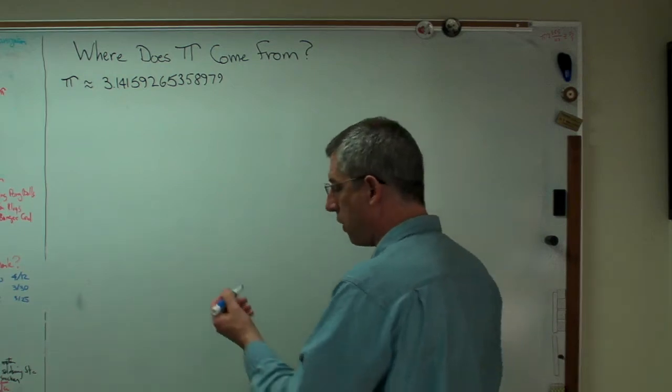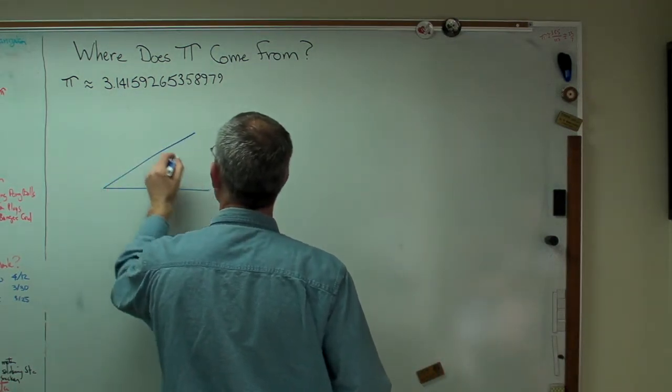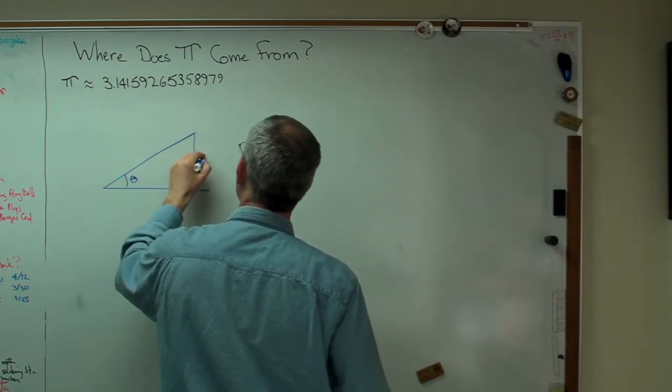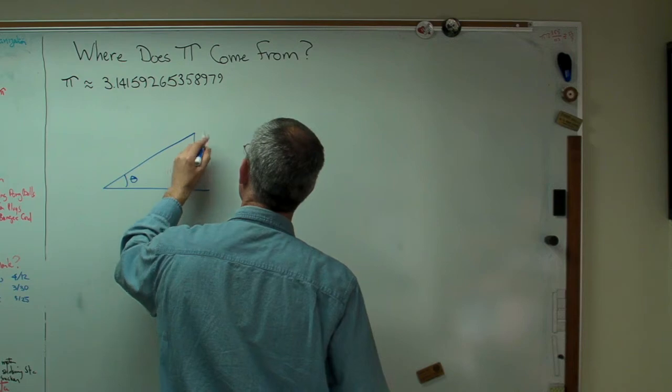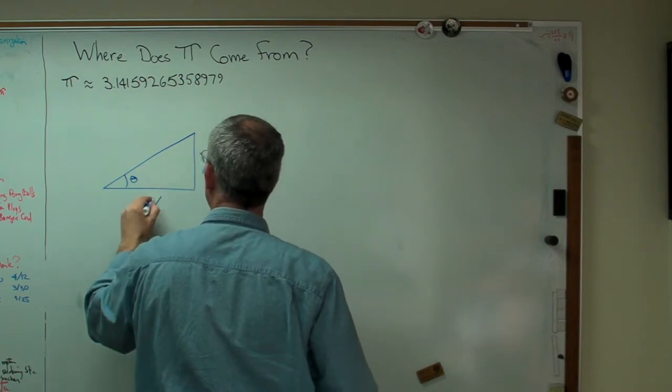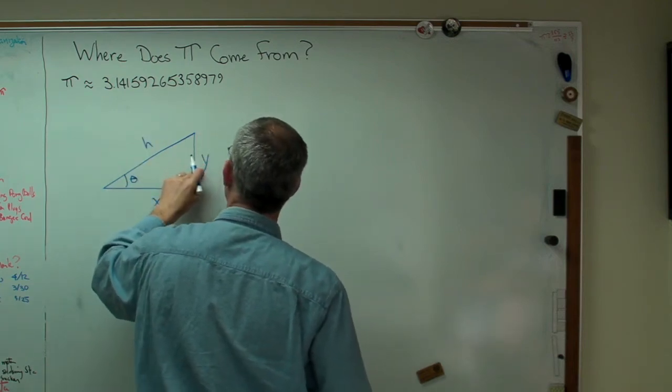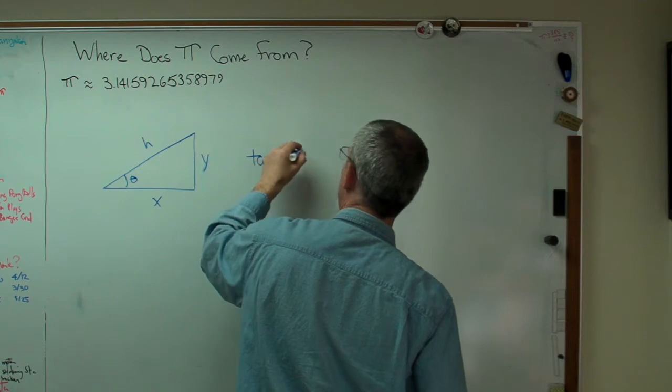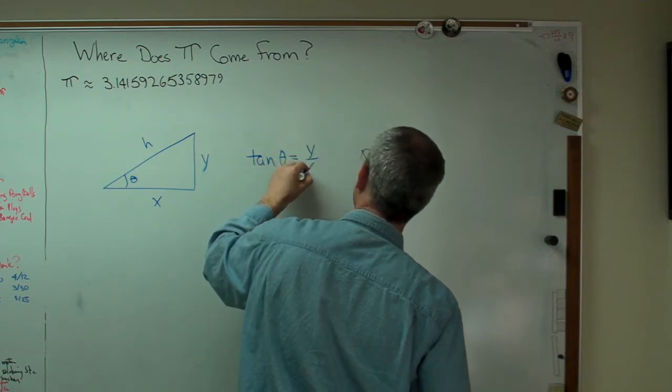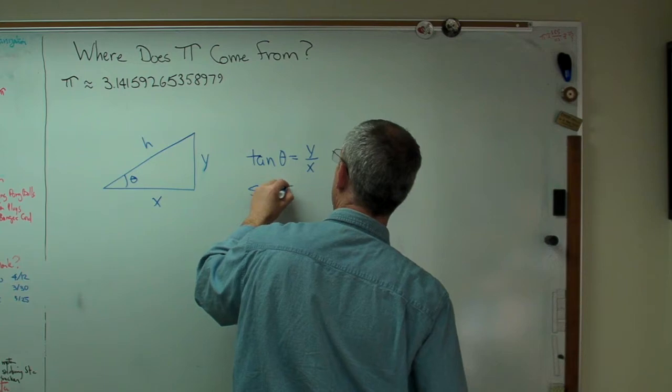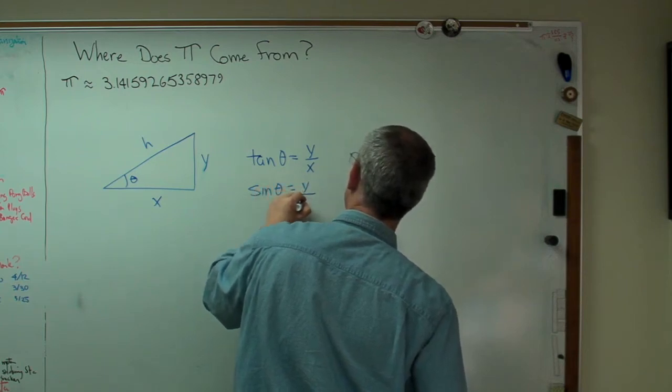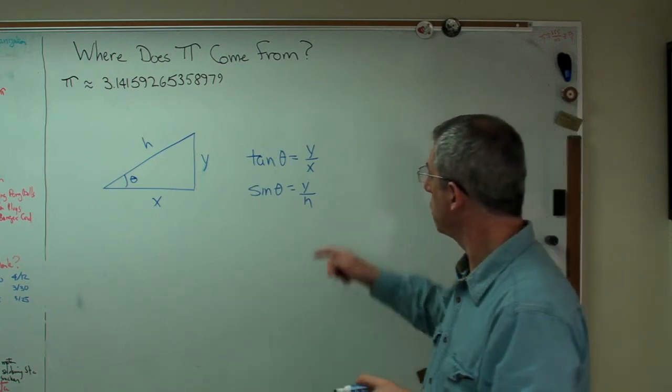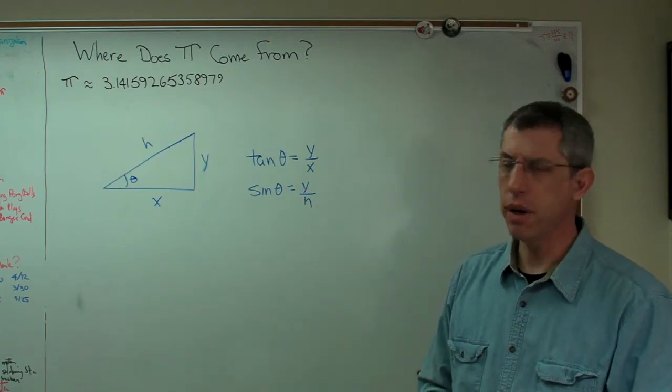The first thing we need to know is some basic trigonometry. If that angle is theta, and let's call this y, x, and the hypotenuse h, we can say things like tangent of theta equals y over x and sine theta equals y over h. This is something we all learned pretty early on. If there was a way to make pi show up here somewhere, this might be helpful.